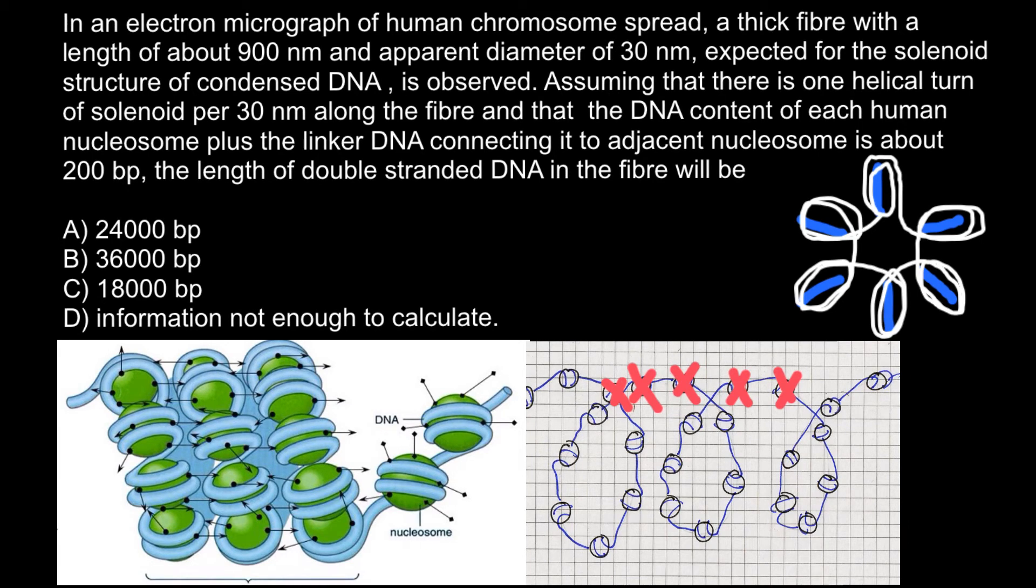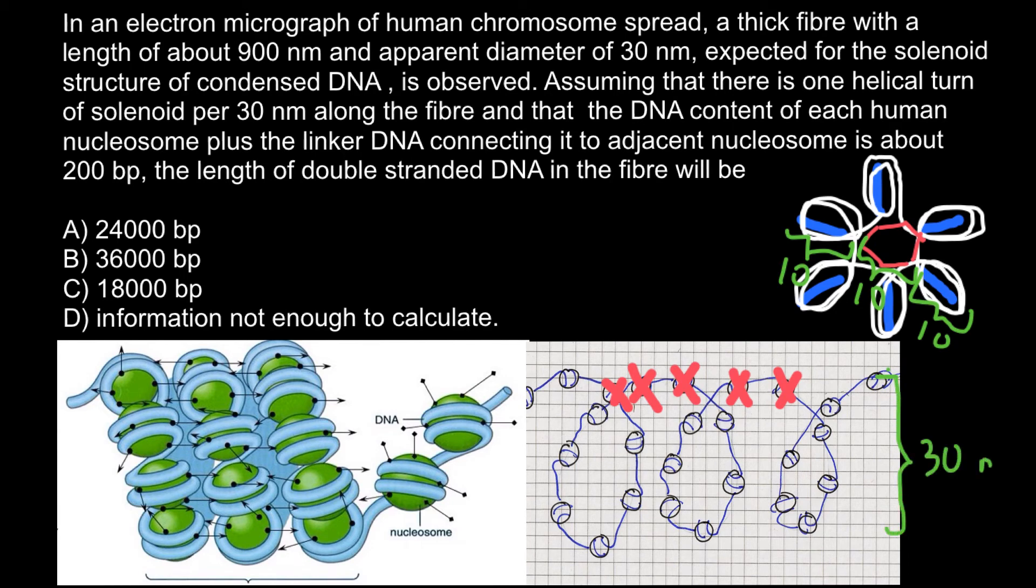If we have six nucleosomes per one turn, we also would have six linker proteins here that would fix this DNA in place. So this is view from the top. And also, I want to tell you that this diameter would be 30 nanometers. As I said, one nucleosome is about 10 nanometers. So here we also have 10 nanometers.